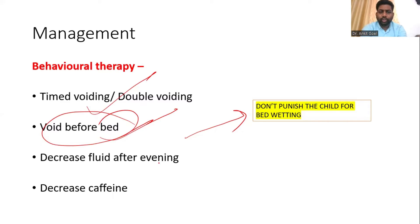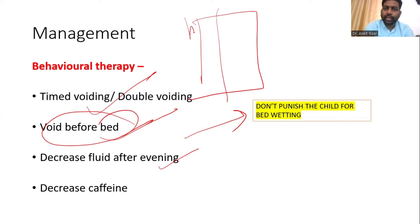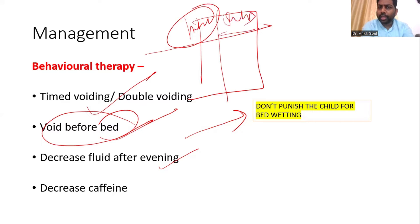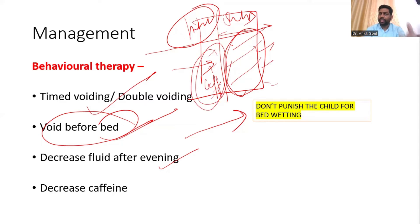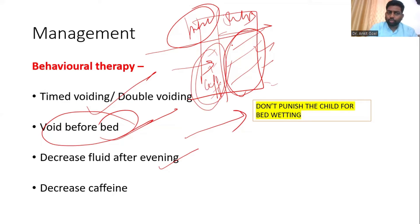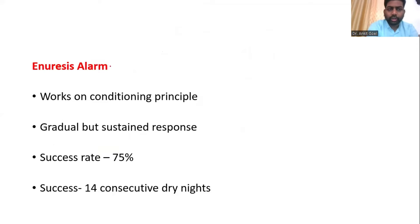Another behavioral measure is voiding before bed. Also, decrease fluid intake. When the examiner gives you a bladder diary, always go through the intake part — we have a tendency to only look at the output. There will be important points in the intake: either the total volume will be more, or the patient is taking a lot of coffee or tea. If the patient is taking more fluid towards the night, the solution is to decrease caffeine and fluid intake after the evening.